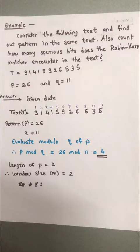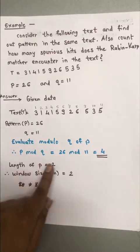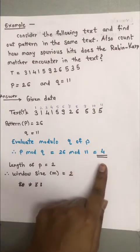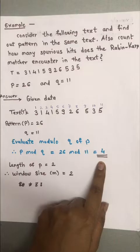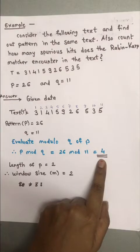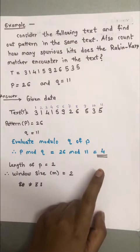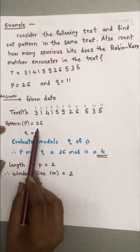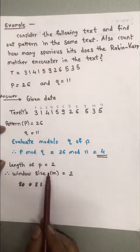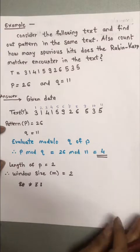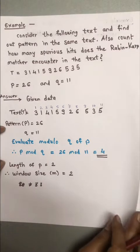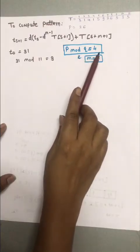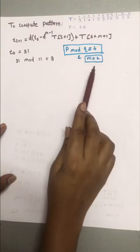We calculate P mod Q, that is 26 mod 11, which equals 4. We consider this value of 4 as the hash of the pattern P for all remaining calculations. The length of P is 2, therefore the window size M is also 2.